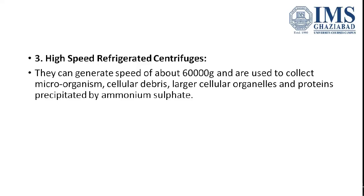The high speed refrigerated centrifuge has a very high speed of up to 60,000 RPM. Because the RPM is so high, it can be used to collect microorganisms, cellulose, or large cell organelles and proteins.